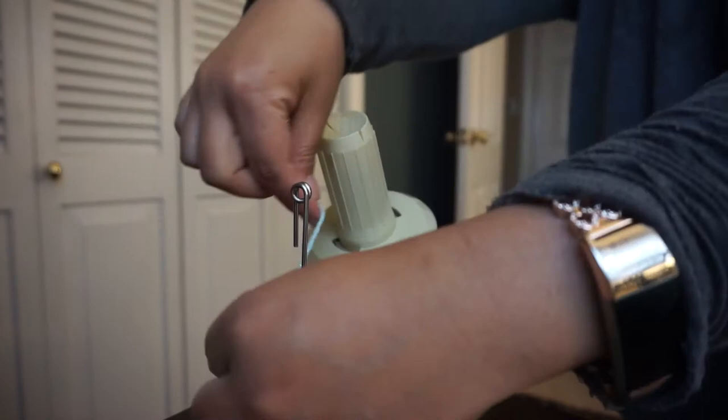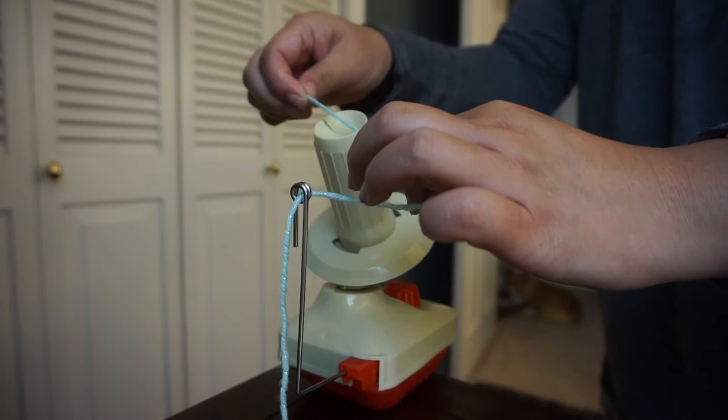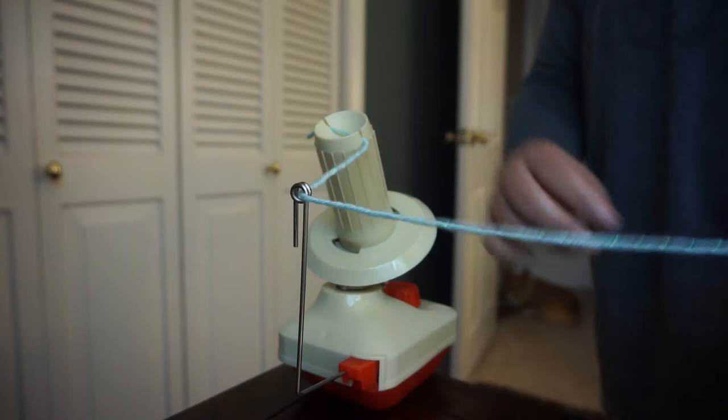Basically what I'm going to do is put the yarn through this, and then go ahead and put this tail end piece right here.